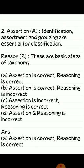Second assertion-reason question. Assertion: identification, assortment and grouping are essential for classification. Reason: these are basic steps of taxonomy. Options: A. Both correct, B. Assertion correct reason incorrect, C. Assertion incorrect reason correct, D. Both incorrect. Answer: A — assertion is correct, reasoning is correct.